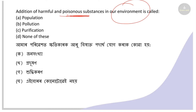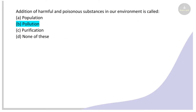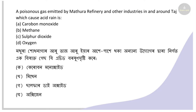Next: Addition of harmful and poisonous substances into our environment is called what? Options: population, pollution, purification, none of these. The right answer is pollution. When harmful substances are added to the environment, it is called pollution.